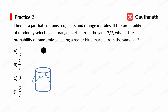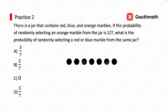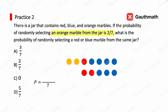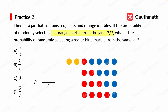We have 7 marbles total. When dealing with probability, we use the number of desired outcomes divided by the number of total outcomes, so 7 goes in the denominator. Because the probability of getting an orange marble is 2 over 7, there must be two orange marbles. For the remaining marbles that are red or blue, we could have 1 red and 4 blue, or 2 red and 3 blue, and so on — but it doesn't matter the combination. The total number of red and blue marbles is always 5, because 7 minus 2 is 5. So the numerator is 5, and the final answer is 5 over 7.